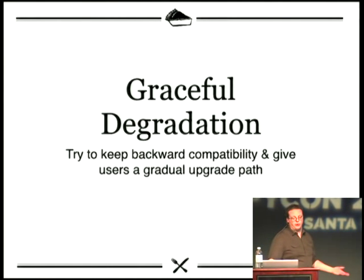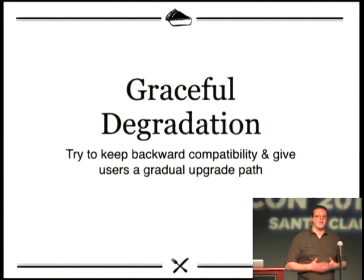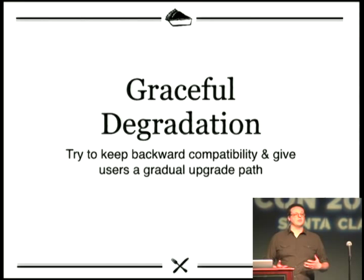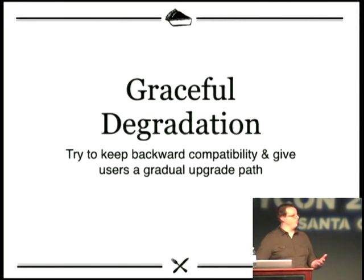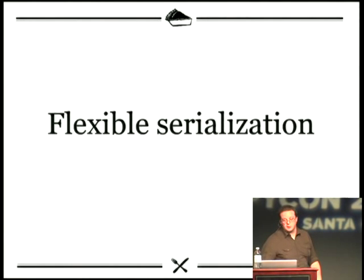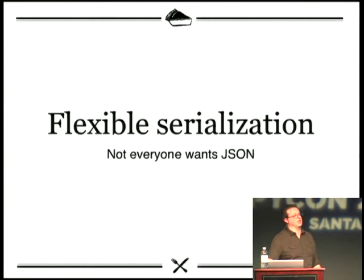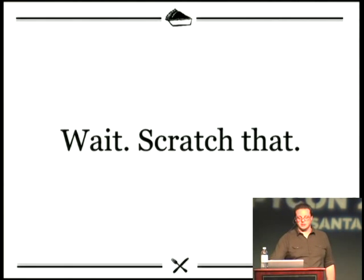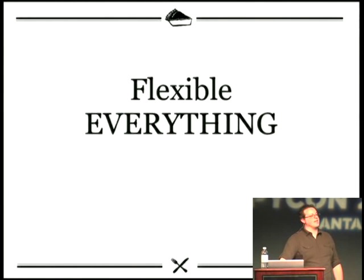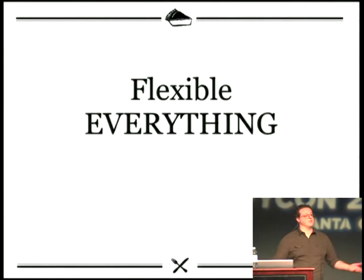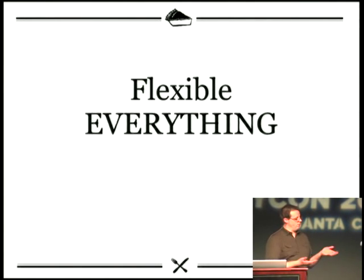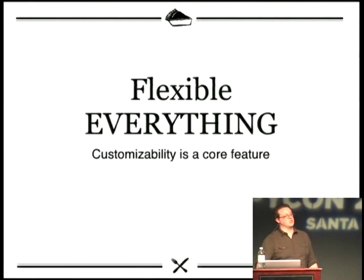There's the concept of graceful degradation. Your API should probably be backward compatible because not everyone can upgrade the moment you want them to. Being able to support people who are on an older version of the API or to handle gracefully changes in it is very useful for people who have rarely-changing clients. The concept of flexible serialization — not everybody wants JSON. Some people's toolkits better support YAML or XML. In the case of iOS, there's binary plists. But why not do flexible everything? Because you're trying to produce the best possible thing for a client to consume. Customizability should be a core feature for both you as a developer using TastyPie and for people on the other end fetching the data.